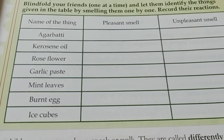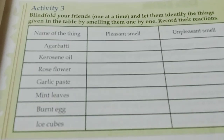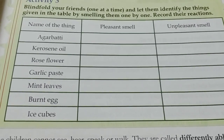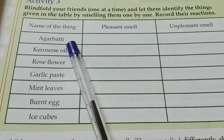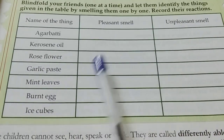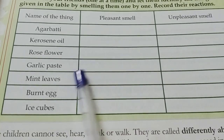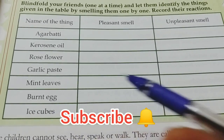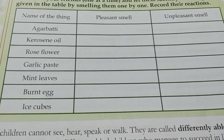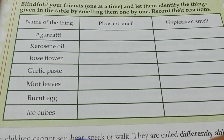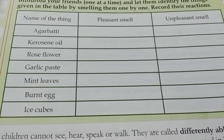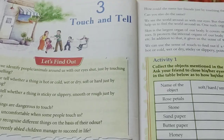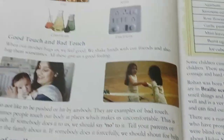Here is another activity about smelling. You blindfold your eyes, and when a smell is presented, you have to tell whether it is a pleasant or unpleasant smell. Agarbatti gives a pleasant smell. Kerosene oil is unpleasant. Rose flowers are pleasant. Garlic paste depends on the person — some say pleasant, some say unpleasant. Mint leaves are pleasant. Burnt egg also depends on the person. Ice cubes give out cool vapor and no real smell.